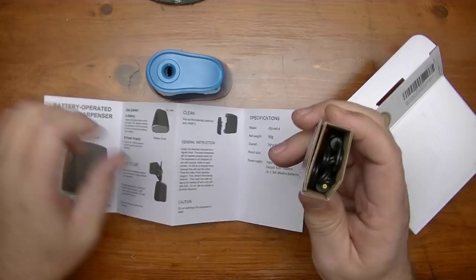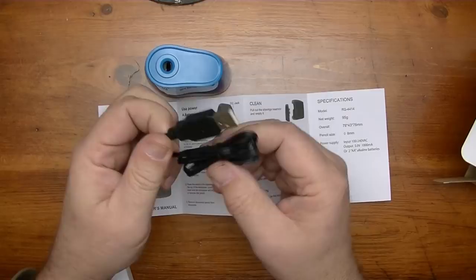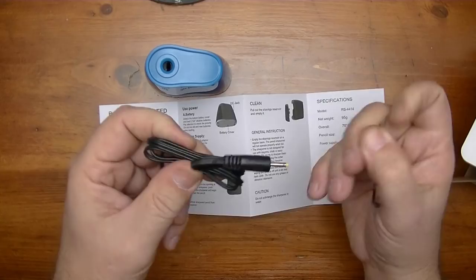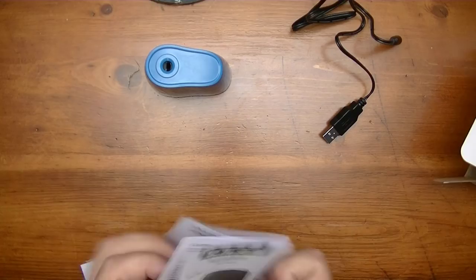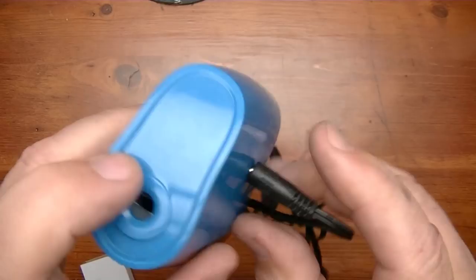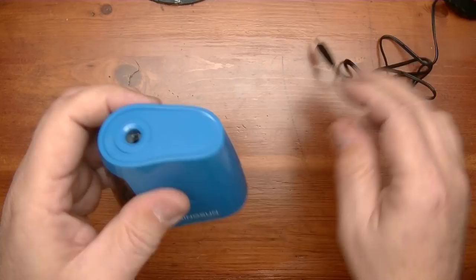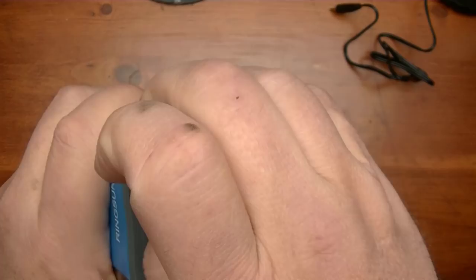It's USB powered as well. I'm going to give it a battery test and then a USB test. Here's where you're going to plug in for your USB. Pencil goes in here, of course. Here's where the batteries go underneath. I'll leave this open for now because I'm going to put batteries in. You just pull that out to dump out the shavings.